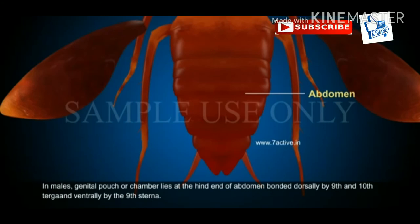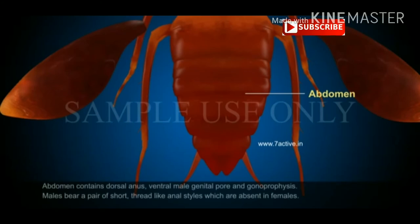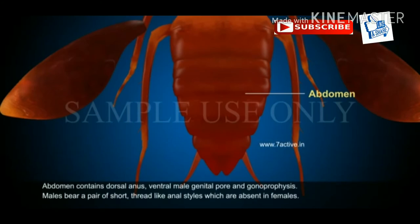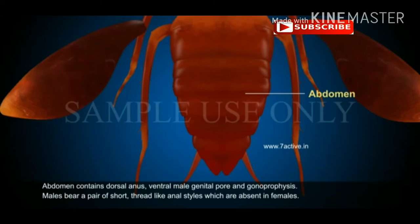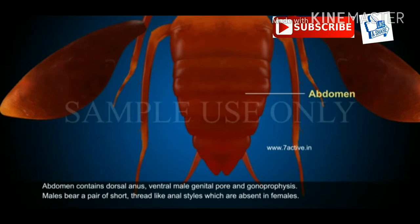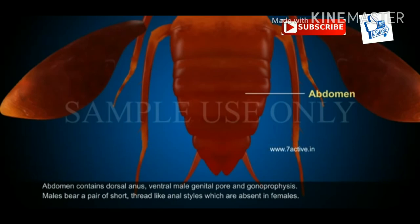In males, the genital pouch or chamber lies at the hind end of the abdomen, bounded dorsally by the ninth and tenth tergites and ventrally by the ninth sternite. The abdomen contains a dorsal anus, ventral male genital pore, and gonapophyses. Males bear a pair of short thread-like anal styles, which are absent in females.